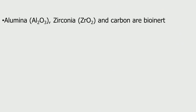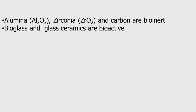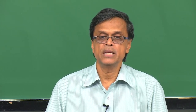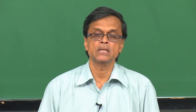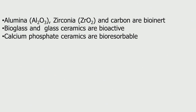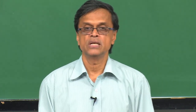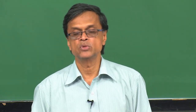If you take alumina (Al2O3), zirconia (zirconium oxide), and carbon — they are bioinert, meaning they do not cause any adverse reaction to the host system. If you take bioglass or glass ceramics — silica-type material — they are bioactive, meaning they take part in the integration process. If you take calcium phosphate ceramics, they are bioresorbable — they will completely disappear over a period of time. So if used for bone filling, when the bone starts growing, this will completely get resorbed.